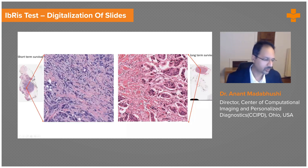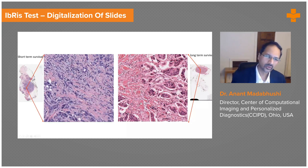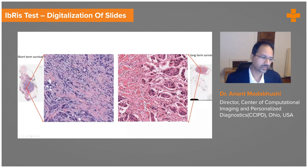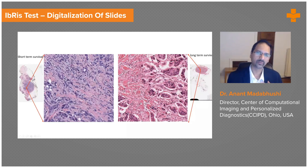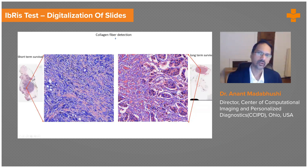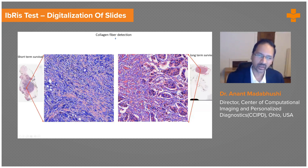Another area where we're using AI and machine learning is to find features that are interpretable. One of the challenges with deep learning is that these algorithms tend to be fairly opaque — it's not really clear what the machine learning algorithm is identifying. In our group, we've taken a different approach: we want to find features and patterns from these images that are interpretable and that resonate with what we know about the pathobiology of the disease.